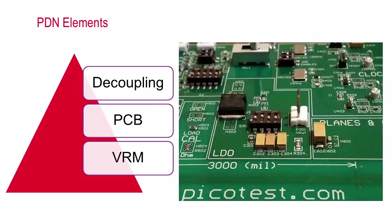Typical power systems are comprised of a voltage regulator module, printed circuit board planes, and decoupling capacitors. Collectively, these form the power distribution network, or PDN. In a well-behaved PDN, the voltage to the load circuitry is maintained within allowable limits under all operating conditions.